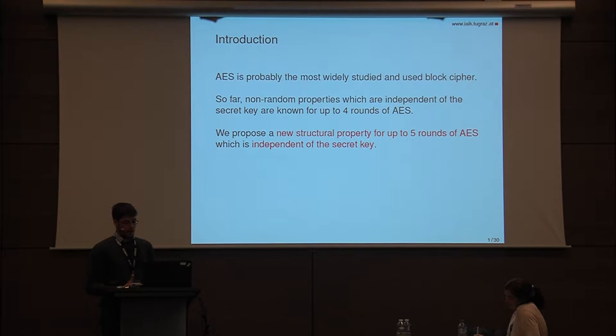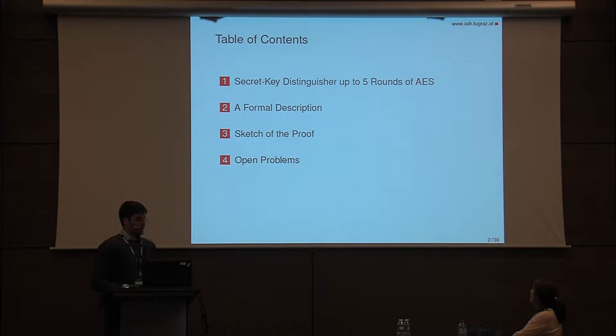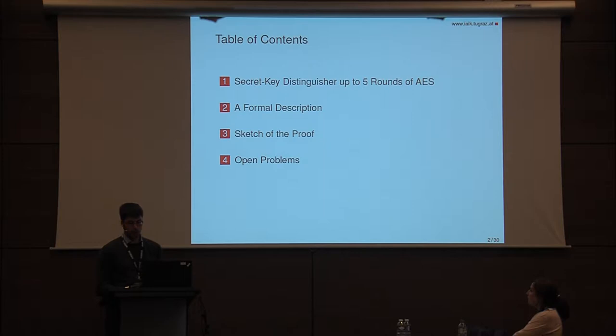The presentation is organized as follows. In the next few slides, I present this new property and show how it can be exploited to set up a new secret key distinguisher for up to five rounds of AES. In the second part, I will give a formal description using the subspace notation recently introduced at FSC 2017 and use this notation to give an idea of the proof. Finally, I will conclude with some open problems.